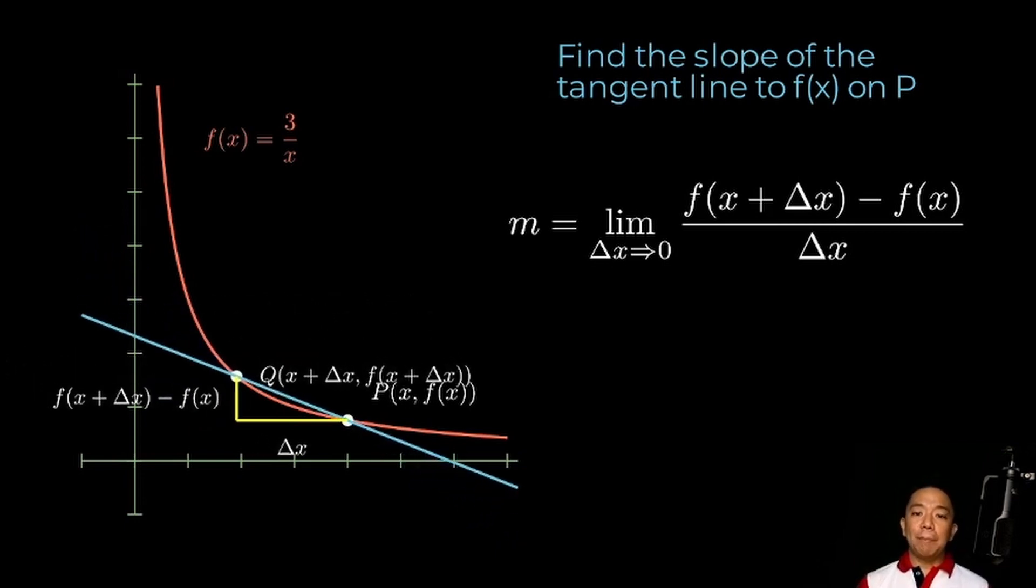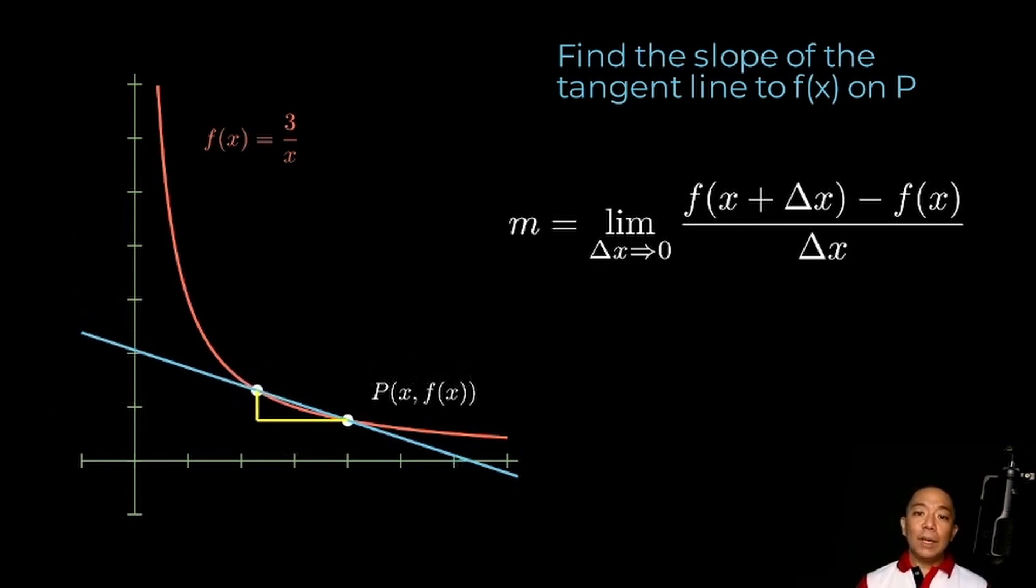Visually, this is what will happen. Liliit yung delta x. So, lalapit ng lalapit si point Q kay point P until yung distance nila will approach zero. And then, we'll have the tangent line to f of x on P.